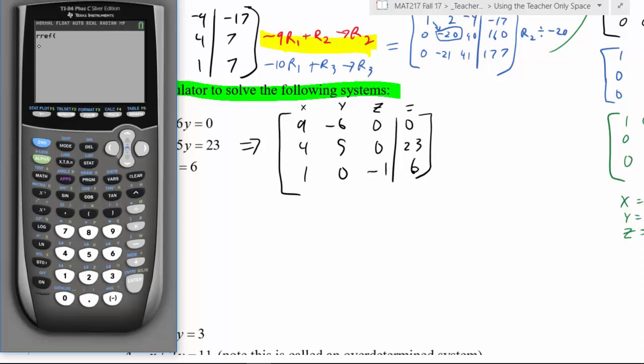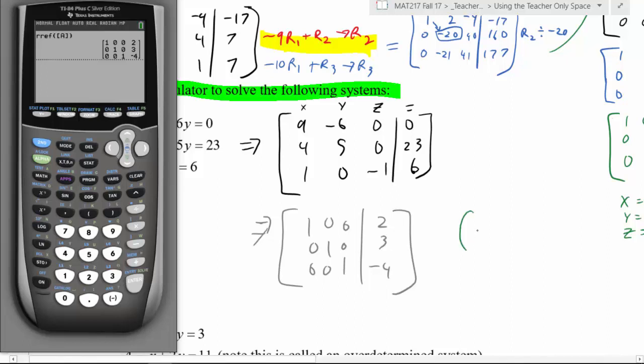So I selected RREF, and it's saying what do you want reduced row echelon form of? I want it of the matrix we just typed in. So I'm going to go back to the matrix screen, hit enter, and it fills in that matrix A for me. When I hit enter, it gives me an answer. It has told me that this turned out to be ones in the diagonal, zeros everywhere else, and 2, 3, negative 4. So the answer is x equals 2, y equals 3, z equals negative 4.